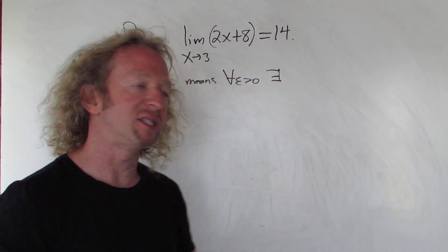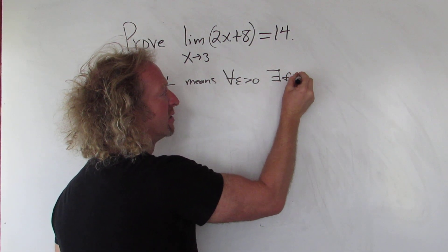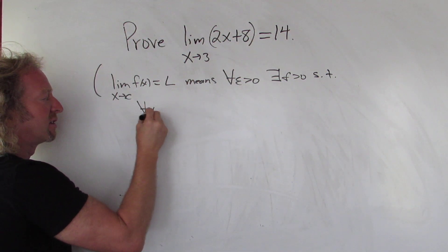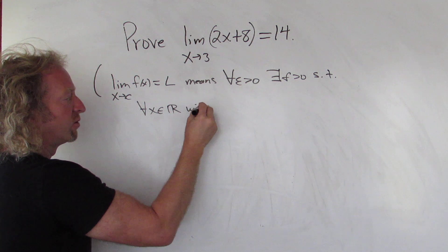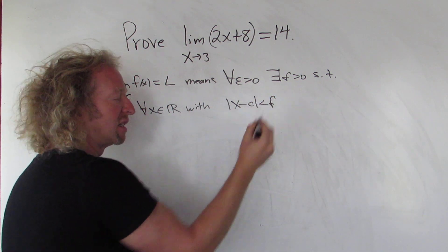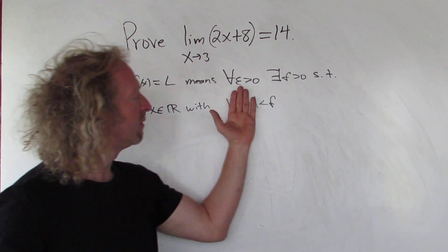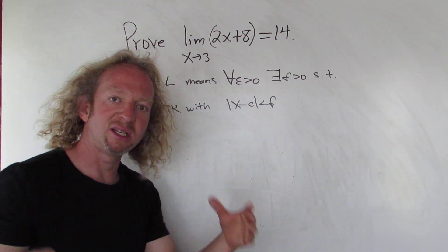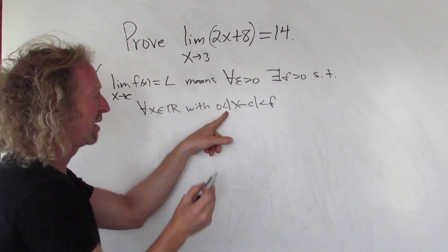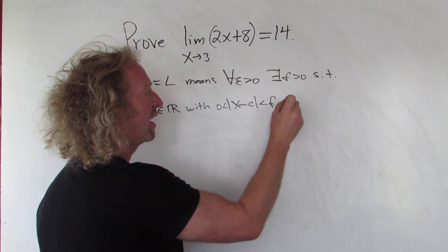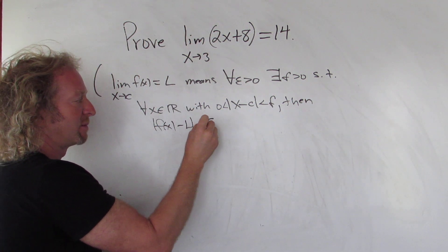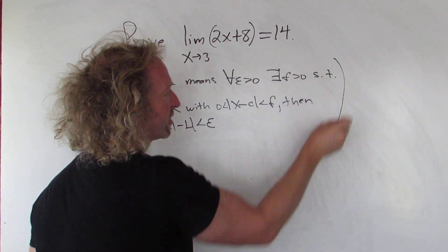So that backwards E means there exists a delta greater than zero such that for all x in R with, so for every x where the distance between x and c is less than delta. So remember, the absolute value of x minus c is the distance between x and c. So whenever this distance is less than delta, then the distance between f(x) and L is less than epsilon. So that's the definition of a limit.